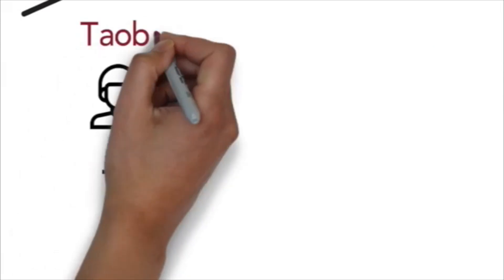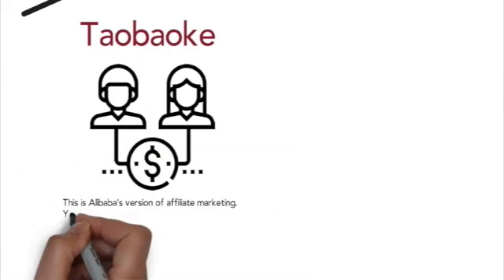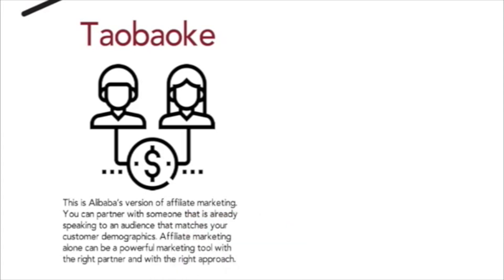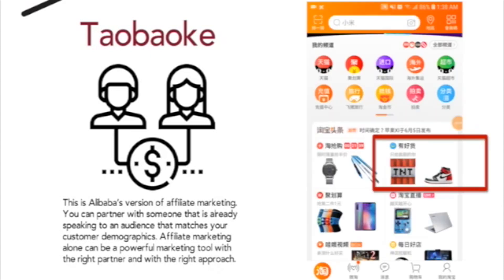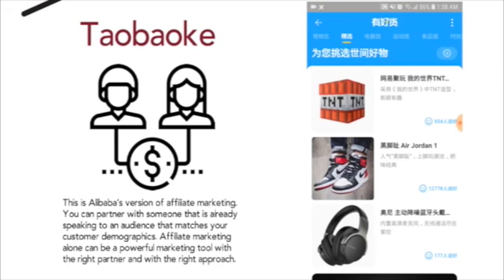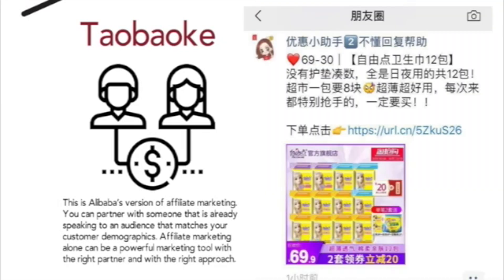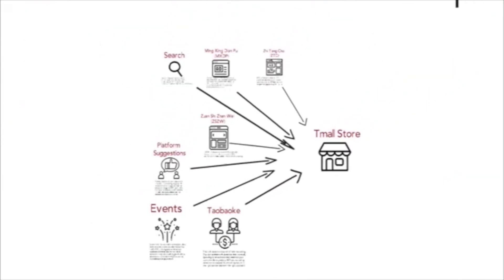Taobao Ke is the name for affiliate marketing in Taobao. You can partner with key opinion leaders, KOLs, that already speak to your target audience and pay them a commission on each sale. Some of them may show up on the homepage in a section dedicated to KOLs. Others will promote your product through their social networks like QQ, WeChat, and these days KOLs are most active in video apps like Douyin and Kwaisho.